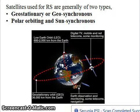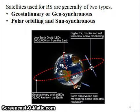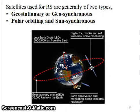Satellites used for remote sensing are generally of two types: geostationary or geosynchronous satellites, and polar orbiting and sun-synchronous satellites. Let's see these one by one.